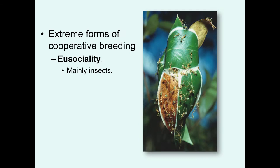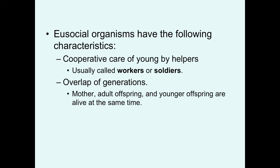The topic of this lecture is eusociality. Eusociality is basically an extreme form of cooperative breeding and is seen primarily in insects in a diverse array of insects, but it's also seen in one group of mammals.